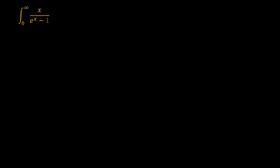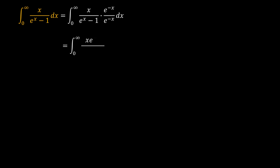One thing we can do with this problem is divide both the numerator and denominator by e to the power x, or equivalently multiply by e to the power negative x in both numerator and denominator. In the numerator we now have x times e to the power negative x, and in the denominator we have 1 minus e to the power negative x.